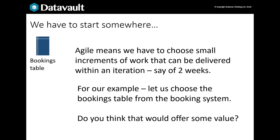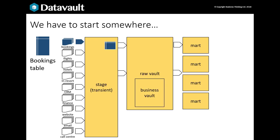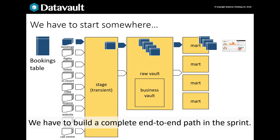We should identify small increments of delivery we can deliver in a sprint. Perhaps our users have told us the booking table is very important — they want to know about revenue recognition across the year and the number of active customers. So we need to develop a staging load of bookings data, split it out into the vault into hubs, links and satellites, construct a simple mart, build a dashboard and perhaps load some historical data as well. We have to build a complete end-to-end path in the sprint.